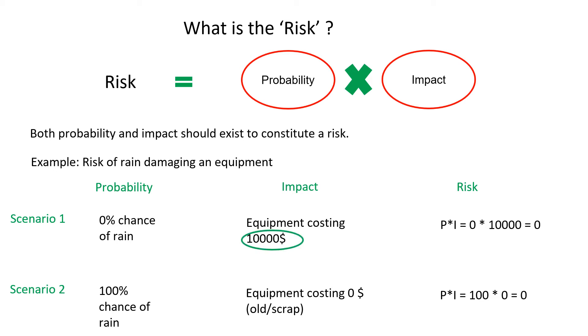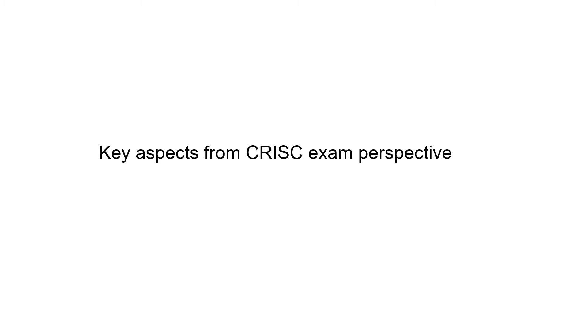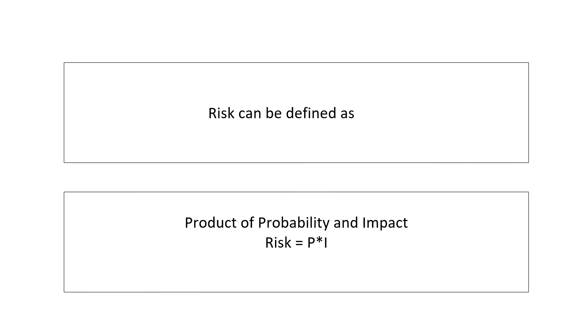This indicates both probability and impact play an important part in calculating risk. Even if my equipment costs $10,000 but probability is zero, risk will be zero. On the other hand, even if there is 100% probability but equipment value is zero, risk will also be zero. From an exam perspective, risk can be defined as the product of probability and impact.